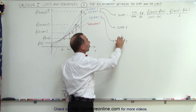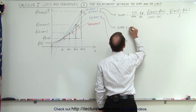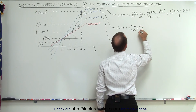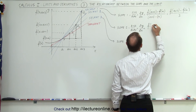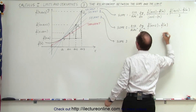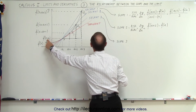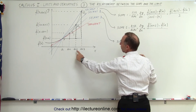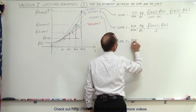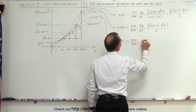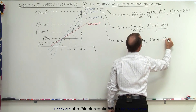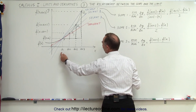Then we can do the same for secant 2, which gives slope 2 — again, rise over run, which is the change in y divided by the change in x. That would be the function evaluated at A plus 2, minus the function evaluated at A, divided by A plus 2 minus A, which is simply divided by 2. And for the third secant line, that's equal to the rise over the run, which is the change in y divided by the change in x, equal to F(A+1) minus F(A), all divided by 1.